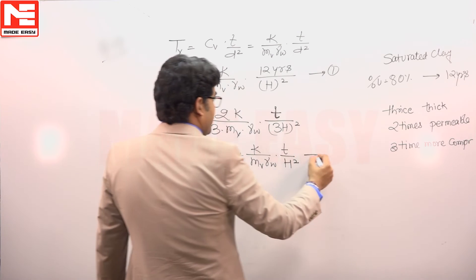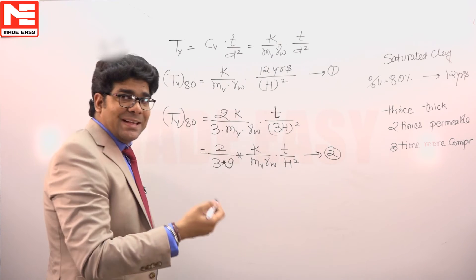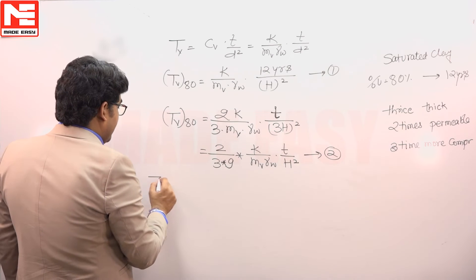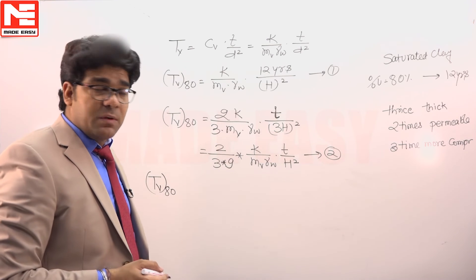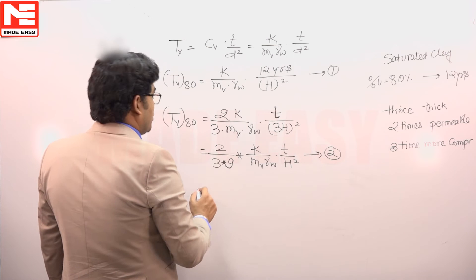By equating these two equations, equation number 1 and 2, we can easily calculate this T. If TV is the same—80% degree of consolidation—TV is the same, so both equations will be equal.